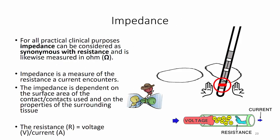When stimulating, we cannot decide the impedance, but it is of importance for understanding the stimulation. When current pours into the brain from the contact, it will encounter a resistance. For all practical clinical purposes, impedance can be considered synonymous with resistance and is likewise measured in ohms. Impedance is a measure of the resistance a current encounters, and this is dependent on the surface area of the contact or contacts used and on the properties of the surrounding tissue. It is calculated from the formula: resistance equals voltage divided by current.